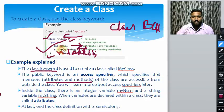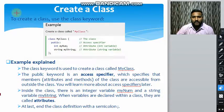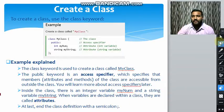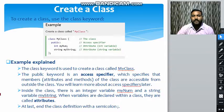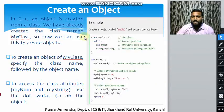When variables are declared within the class they are called attributes. The class definition ends with a semicolon. To use a class in a program, we need an object. Let us see how an object is created.